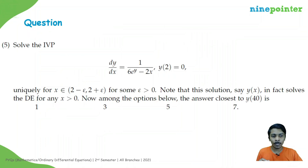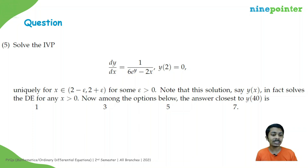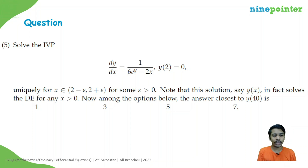In this video we will be solving the fifth question. The problem is: solve the IVP dy/dx = (1/6) e^(y−2x), with boundary condition y(2) = 0, uniquely for x in (2−ε, 2+ε) for some positive ε. Note that the solution y(x) in fact solves the differential equation for any x positive. Among the options 1, 3, 5, 7, find which is closest to y(40).